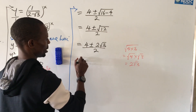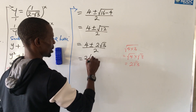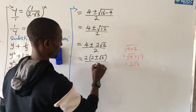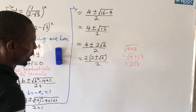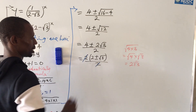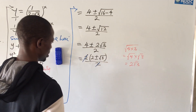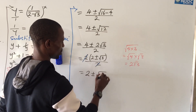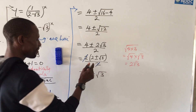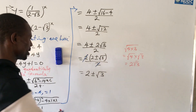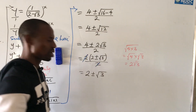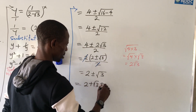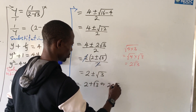Factoring out 2 gives us 2 bracket (2 plus or minus √3) close bracket, all over 2. The 2s cancel, and we are left with 2 plus or minus √3. So we have two solutions: 2 plus √3, or 2 minus √3.